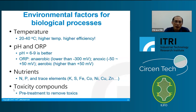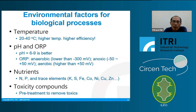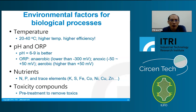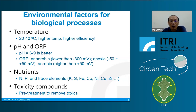The fourth factor is toxic compounds. If toxic compounds are present in wastewater, pre-treatment is needed to remove them before introducing wastewater to the biological treatment process. When these four parameters — temperature, pH/ORP, nutrients, and toxics — are within acceptable ranges, biological processes will operate well.